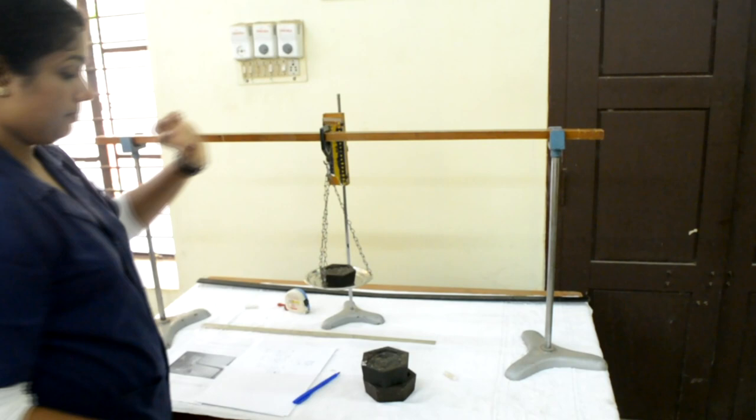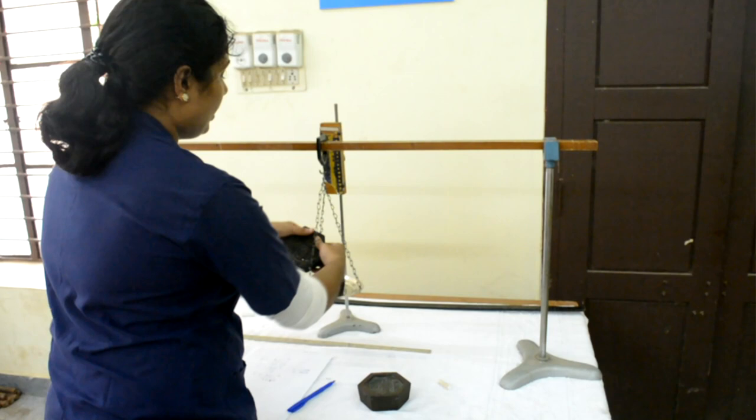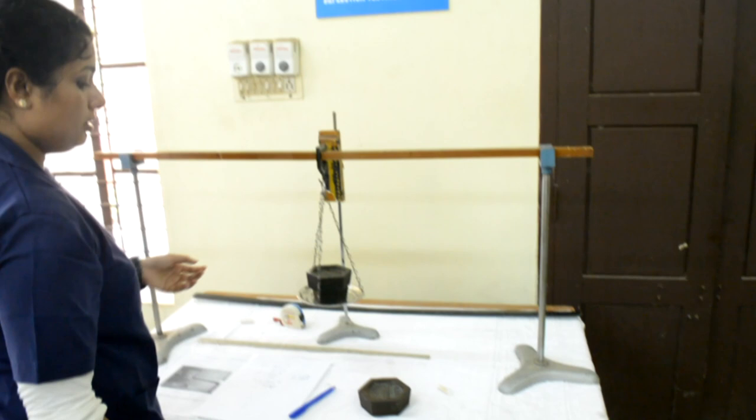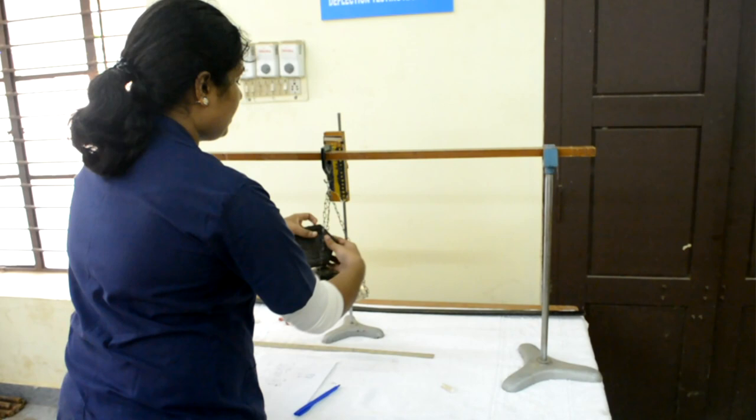Now increment the load by 2 kg. So the total weight becomes 3 kg. Measure the deflection. Again increment it by 2 kg. So the total weight becomes 5 kg. And measure the deflection.